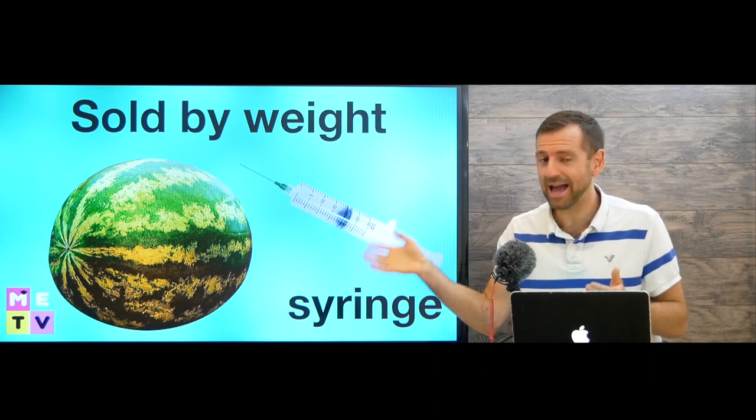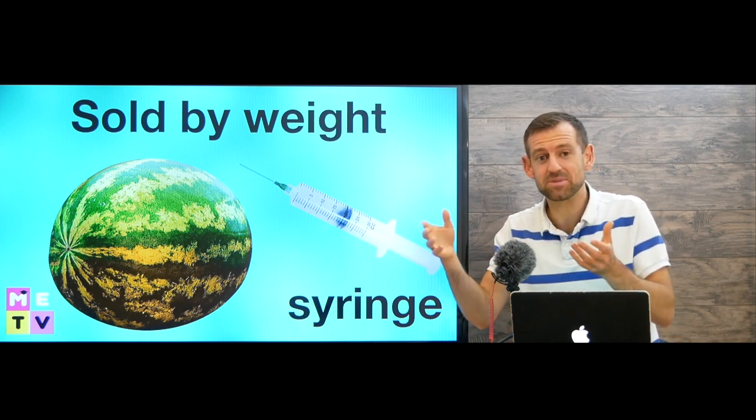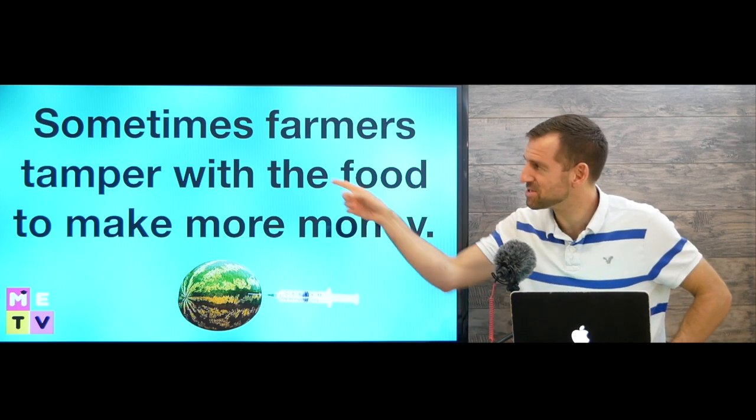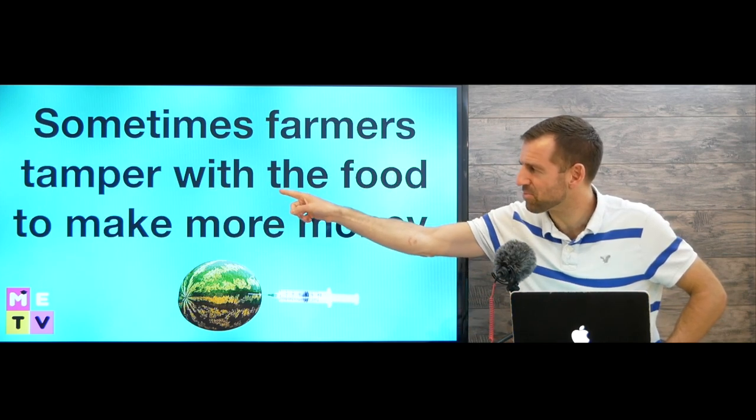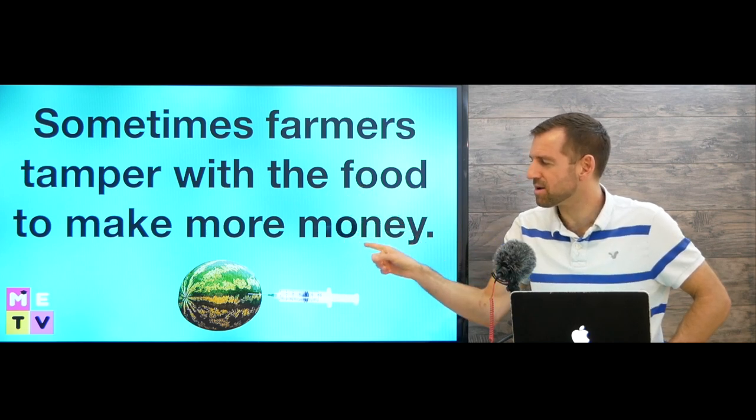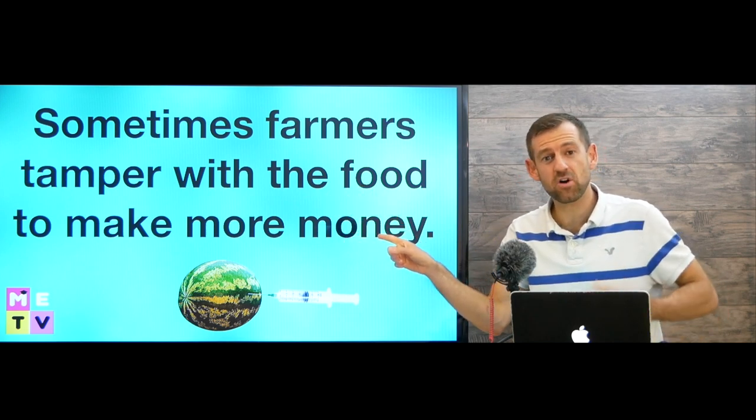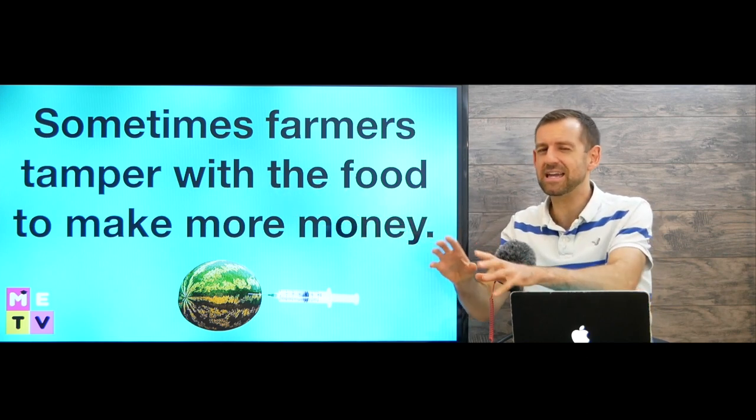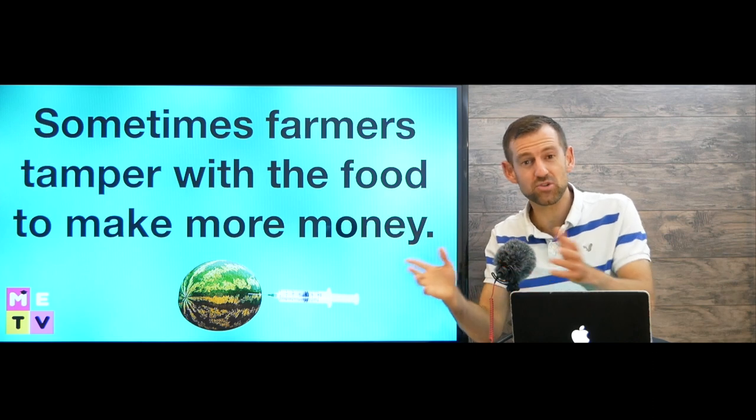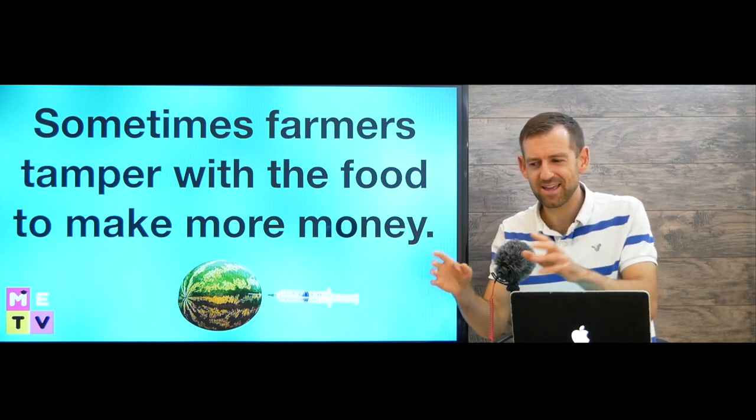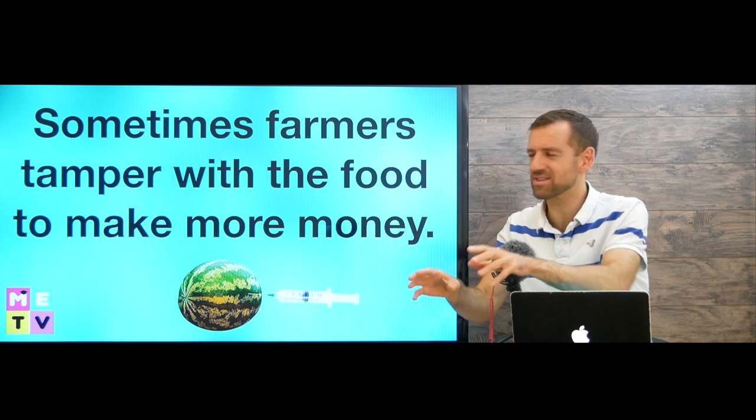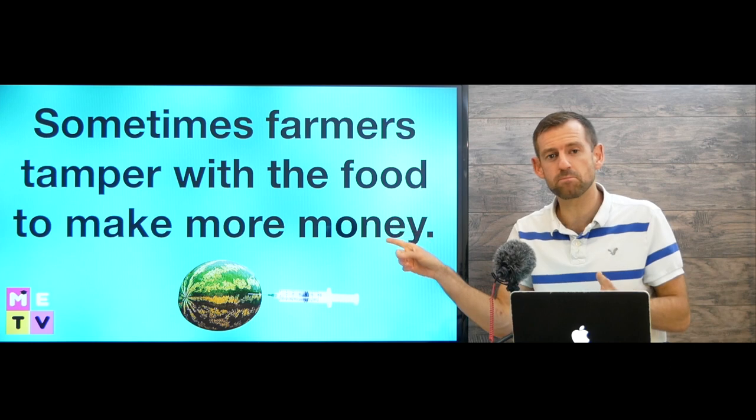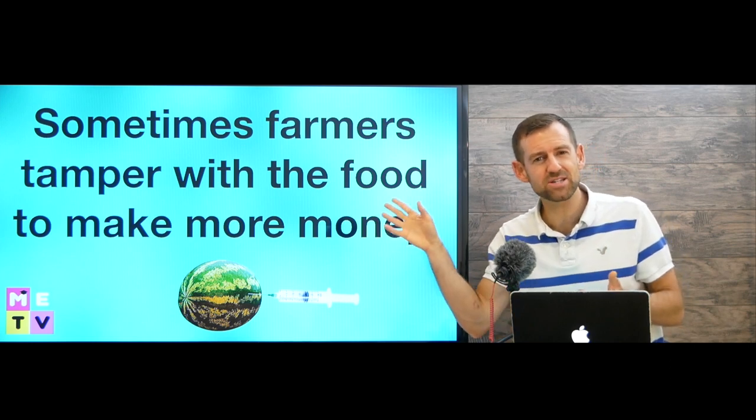You know, this happens sometimes in different parts of the world. People do this. Sometimes farmers tamper with the food to make more money. Sometimes farmers tamper. Tamper means to change in some way. It's not a good word. Tampering is a bad word. They're tampering with it. So sometimes farmers tamper with the food to make more money. Why do they do this?